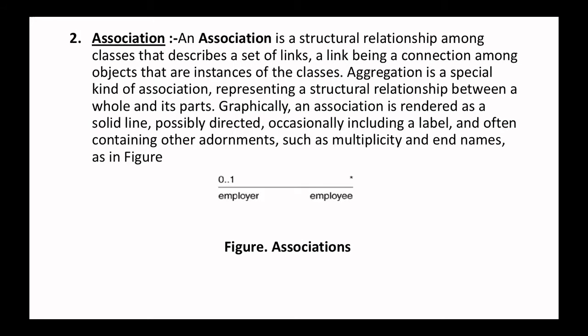Moving to the next: association. An association is a structural relationship that describes a set of links, a link being a connection among objects. Aggregation is a special kind of association representing a structural relationship between a whole and its parts. Graphically, an association is presented as a solid line, possibly directed, occasionally including a label, and often containing other adornments such as multiplicity and role names.